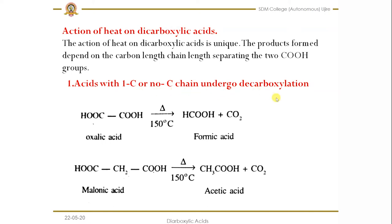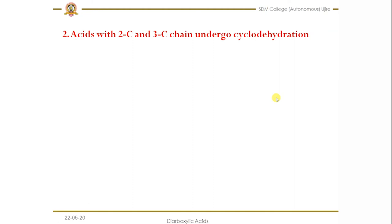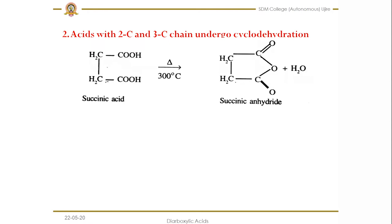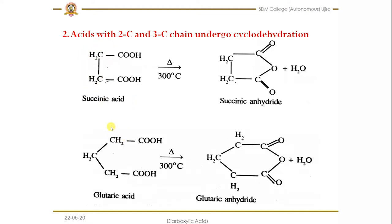Second, acids with two or three carbon chains in between the two carboxylic groups undergo cyclo dehydration. The example for two carbons is succinic acid — you can see there are two carbons. If you have three carbons, the example is glutaric acid, which also undergoes cyclo dehydration.